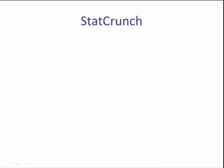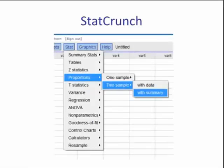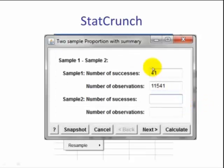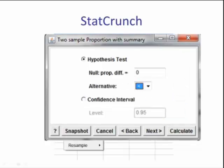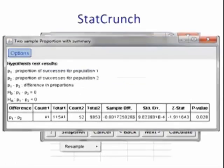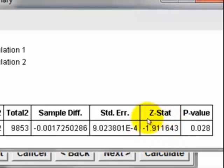In StatCrunch, we go to Stat, Proportions, To Sample With Summary. We enter airbag deaths and the sample size. Sample 2, we enter 52, and then number of observations, that's n, 9,853. We hit Next. The difference is a default of zero, and that's what we want. And we just need to change the alternative from a not equal to, to a less than. We hit Calculate. We see that the z score is a negative 1.91 with the p-value of 0.028.